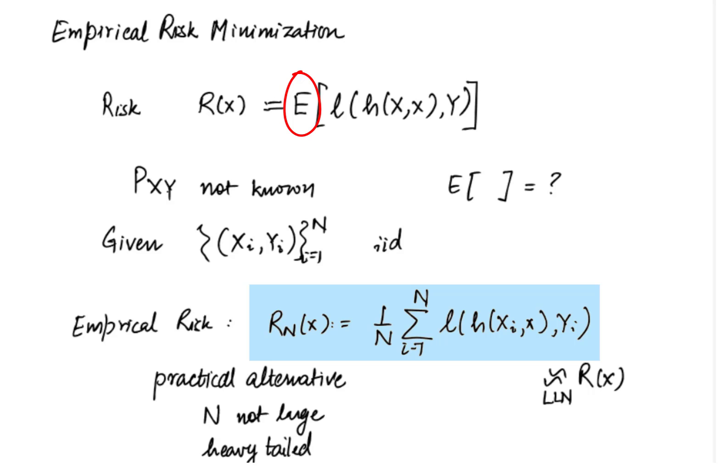You can see that the ERM problem has a finite sum structure. We can collect xi i as xi, yi and denote f of x xi equal to l of h of xi, x, yi.